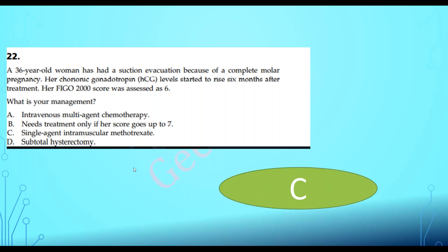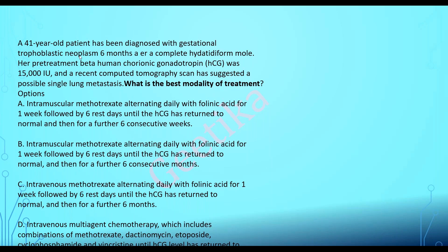With a FIGO score of six, the drug of choice is single agent intramuscular methotrexate alternating with folinic acid for eight days, then six days rest. For a 41-year-old patient diagnosed with GTN, the FIGO score comes out to less than six — HCG of 10³ to 10⁴ scores one point, and lung metastasis scores zero — so the answer is single agent methotrexate.